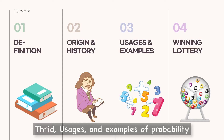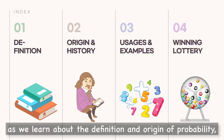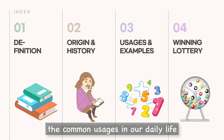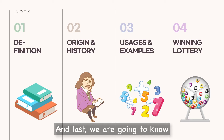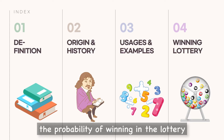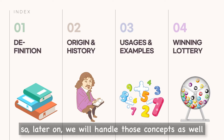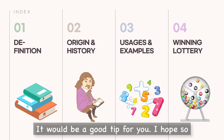Third, usage and examples of probability. As we learn about the definition and origin of probability, we will try to understand the common usages in our daily life. And last, we are going to know the probability of winning in the lottery. To solve that problem, we need to understand the basic concepts regarding probability first, so we will handle those concepts as well. It would be a good tip for you.